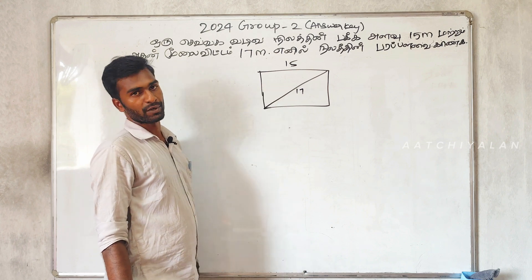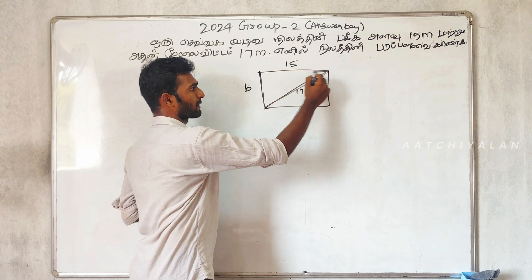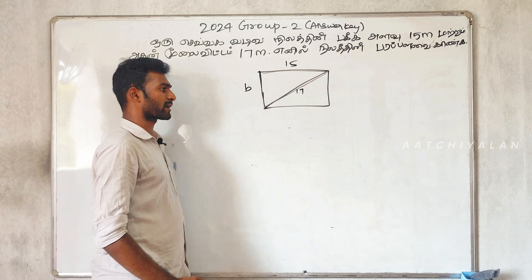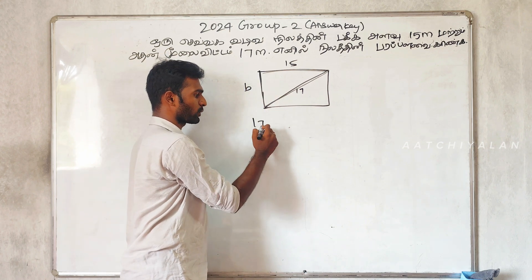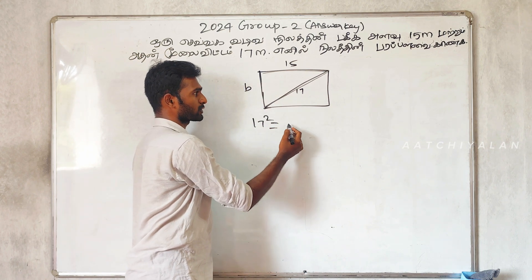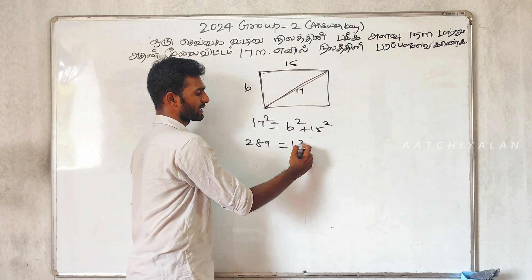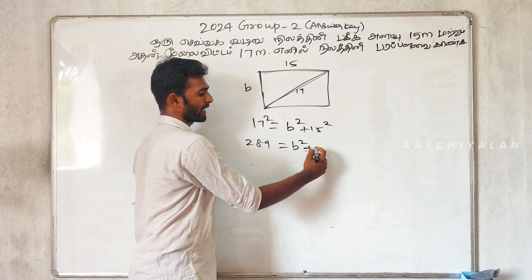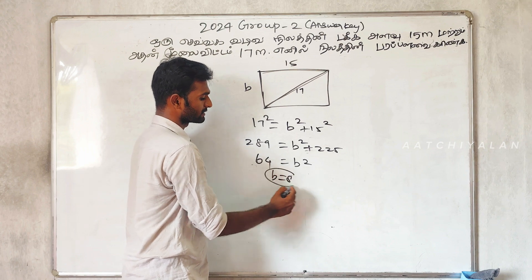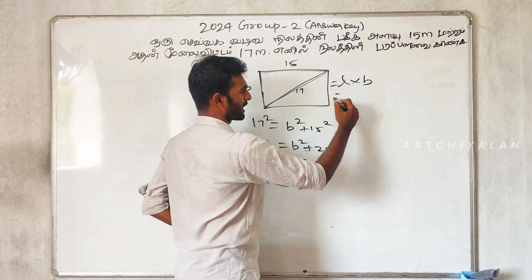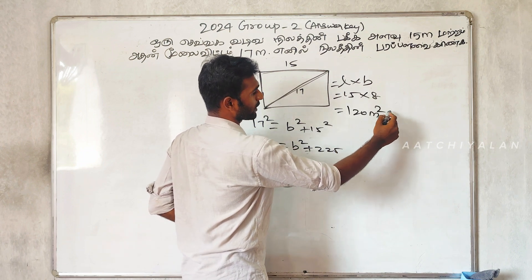The width is 15 m, so this is the length. This is a rectangle with a triangle. We can apply the Pythagoras theorem: hypotenuse squared equals b squared plus 15 squared. So b squared gives b value of 8. Using the formula length times breadth: 15 times 8 equals 120 square metres.